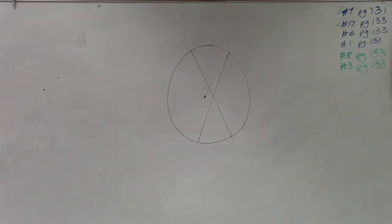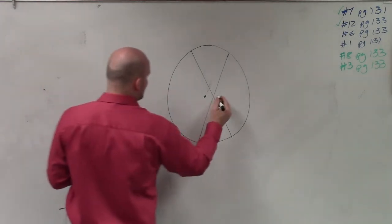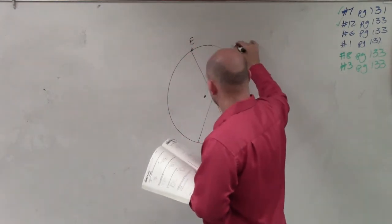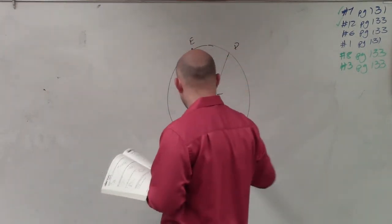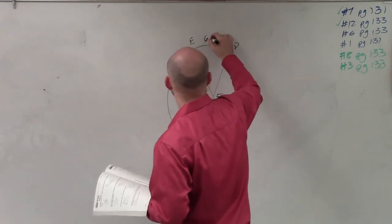All right. On question number five, what they're asking us to do is here's measure of angle five. And we have E, D, A, B, 50 degrees and 66 degrees.